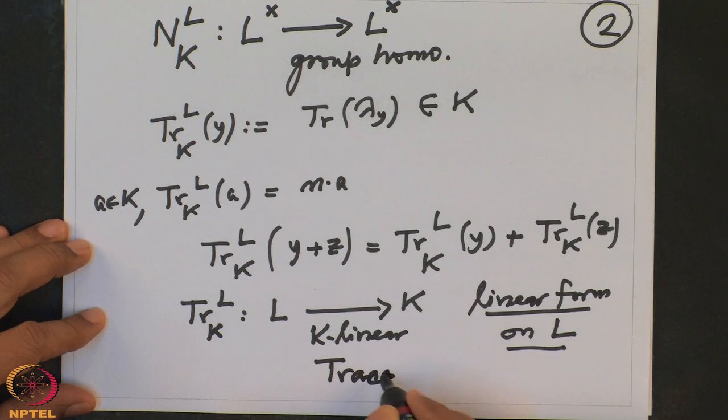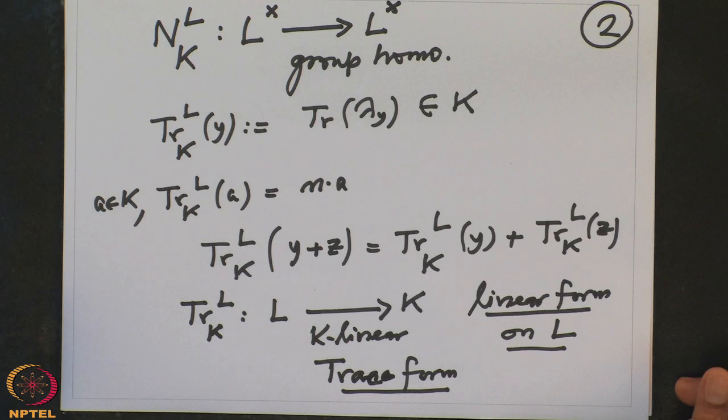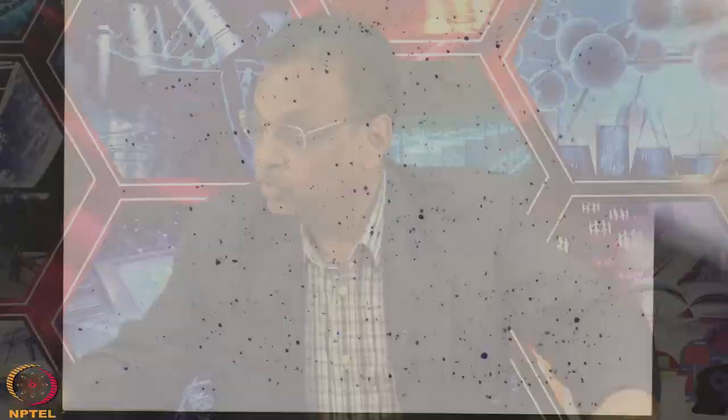The trace form is very important for studying separability. More importantly for us now, if we assume the extension is Galois, we can express the norm and trace in terms of the Galois group. Our methods should always connect field extensions to groups and vice versa — that is our motto in this course.